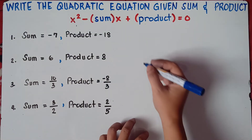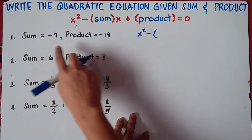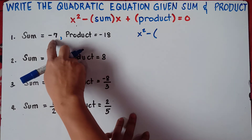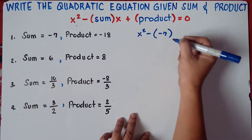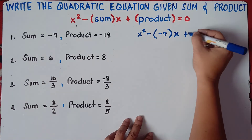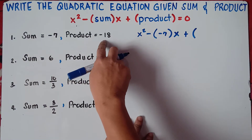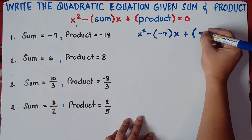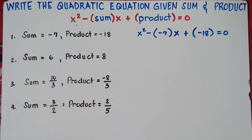So let's start with number 1. Copy x squared minus, then quantity, your sum. We have given sum negative 7. So substitute the value of negative 7 from this equation for the sum. So negative 7, close parenthesis, times x plus parenthesis, the product is negative 18. Just simply substitute this value from the product, which is negative 18. Close parenthesis equals 0.